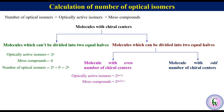The number of meso compounds is equal to 2 raised to the power (n/2) minus 1. So the total number of optical isomers will be equal to 2 raised to the power n minus 1, plus 2 raised to the power (n/2) minus 1.